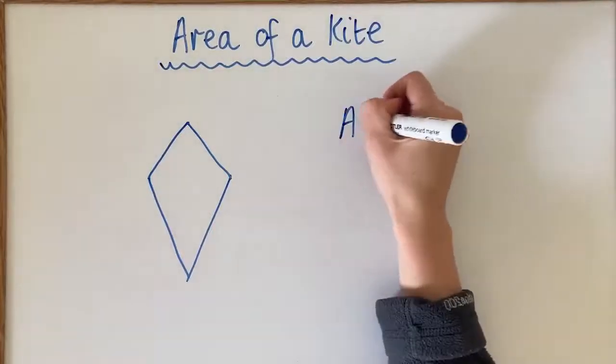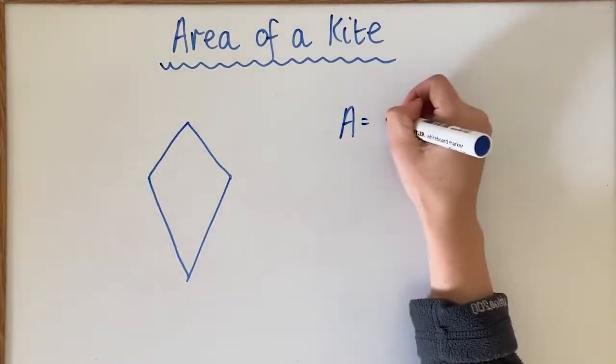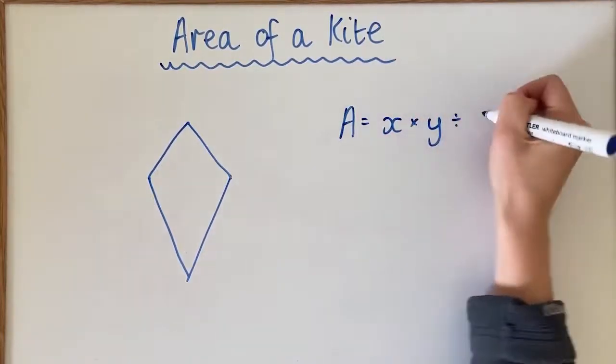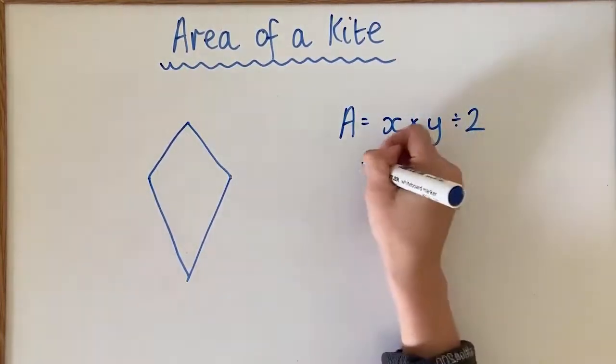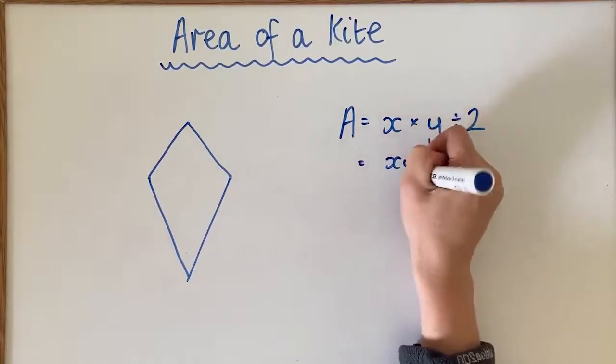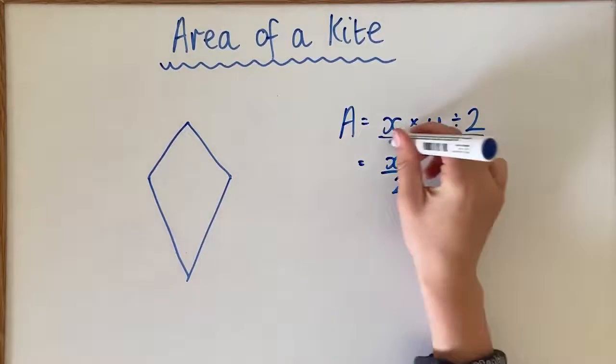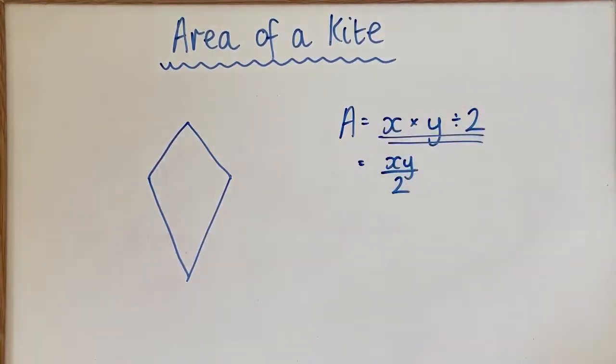Okay, so with a kite, the area of a kite is x times y divided by 2. You might have seen that written differently, like xy over 2, but essentially this is the one that I'm going to be using for this formula.